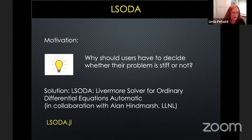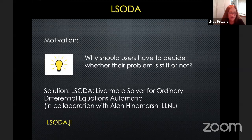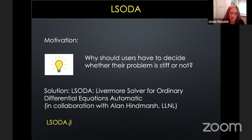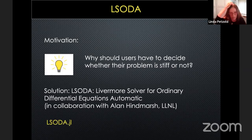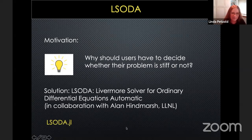The first thing I thought of was: why should users have to decide whether their problem is stiff or not? So I developed this code — in the pharmaceutical industry they all seem to call it LSODA — a version of LSODA that automatically chooses which numerical methods to use and decides whether and when the problem is stiff. I developed that in collaboration with Alan Hindmarsh, who was at Lawrence Livermore National Lab and who had built LSODA. We just added that automatic part, and now I notice that LSODA is available in Julia as LSODA.jl, which pleases me.